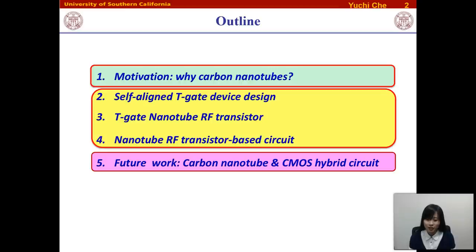Here's the outline for my presentation. First, I will talk about the motivation of my research work — why we want to introduce carbon nanotubes into electronics applications. Then I will give details about my research projects, including the self-aligned T-gate device design and its application in carbon nanotube RF transistors and circuits. In the last part, I will discuss future work in carbon nanotube and CMOS hybrid circuits.